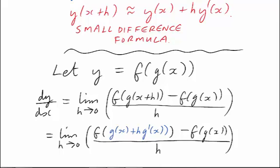Now, let's think about the function f in that first term. It's f of g plus something, and the something, h g primed, is small because h is small. That means that we could apply the small difference formula again, but this time applying it to f, and our small quantity would now be h times g primed of x. Let's do that.